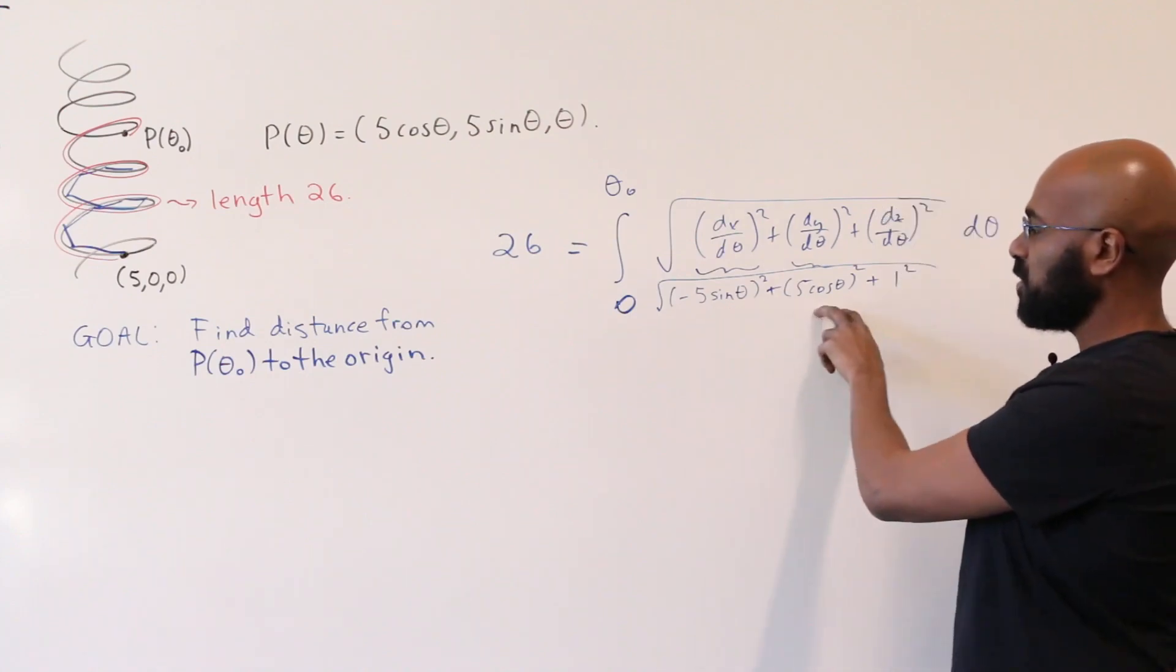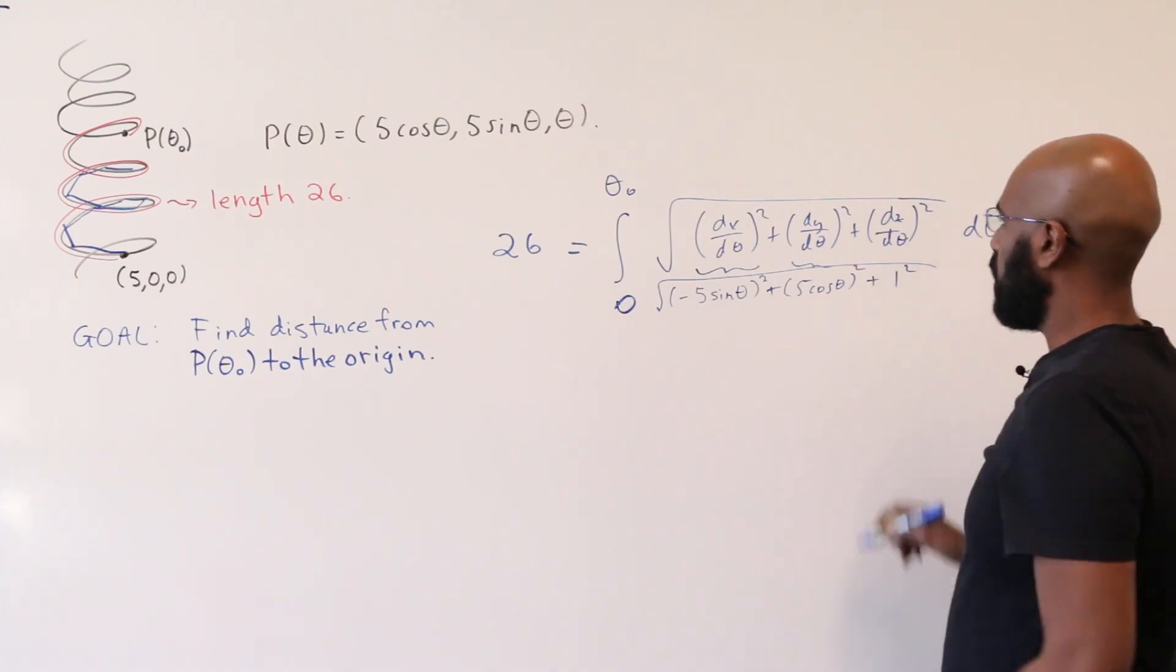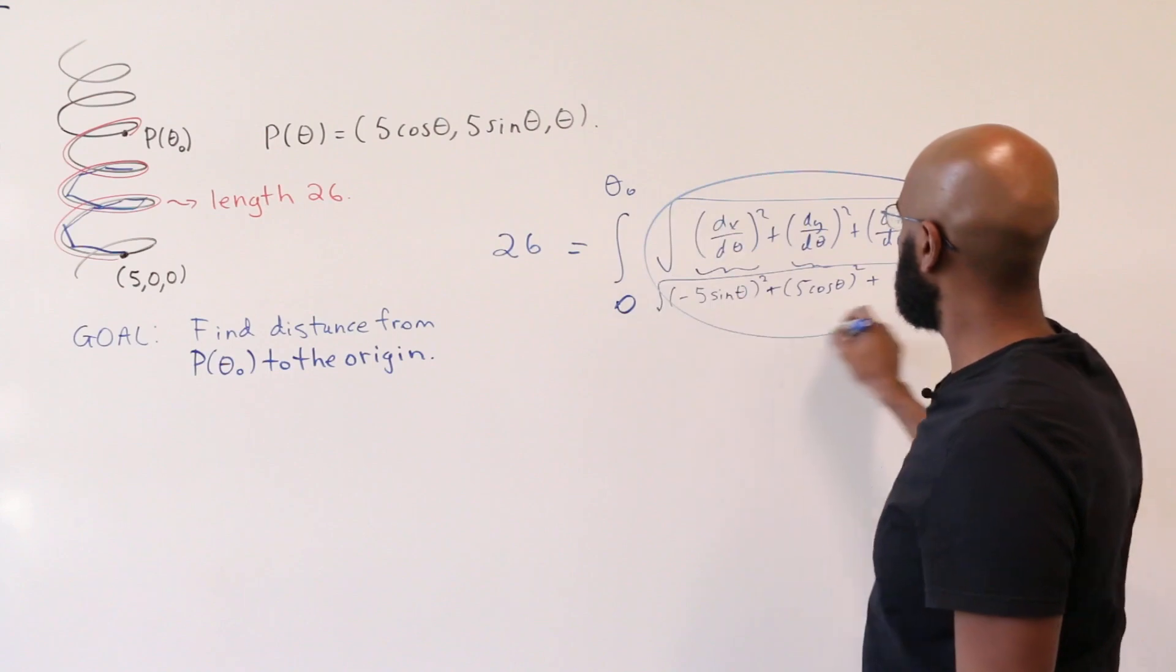Because sin²θ + cos²θ = 1, this sum works out to be exactly 25, but this one is 26. So the argument inside of here is the square root of 26.